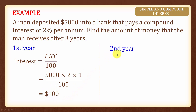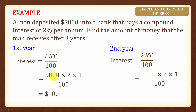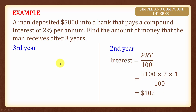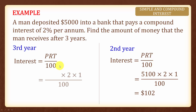This one hundred dollars will earn interest for the next year. For the second year, the interest is calculated using the formula PRT over one hundred. However, the principal amount is now five thousand one hundred dollars. The interest rate is still the same and we are only calculating for one year, so the interest for the second year is one hundred and two dollars.